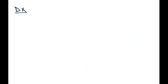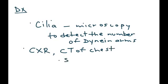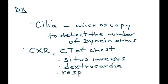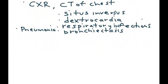For diagnosis of KS, the cilia need to be microscopically analyzed to detect the number of dynein arms. A chest X-ray or CT of the chest will be helpful to detect situs inversus — the flipping of organs in the thoracic and abdominal areas. It will show dextrocardia, any respiratory infections such as pneumonia or bronchiectasis. An analysis of the semen is also done to detect whether sperm motility is normal or abnormal.